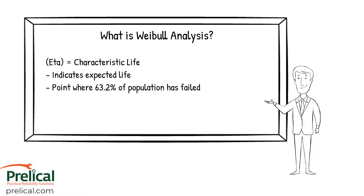The second output of a Weibull analysis is the eta value, or the characteristic life. This indicates the expected life — the point where 63.2% of the population has failed. It's a little bit better indicator than mean time between failure, as mean time between failure is just a straight average, whereas using a Weibull analysis you get a much closer estimate of what the actual expected life is.